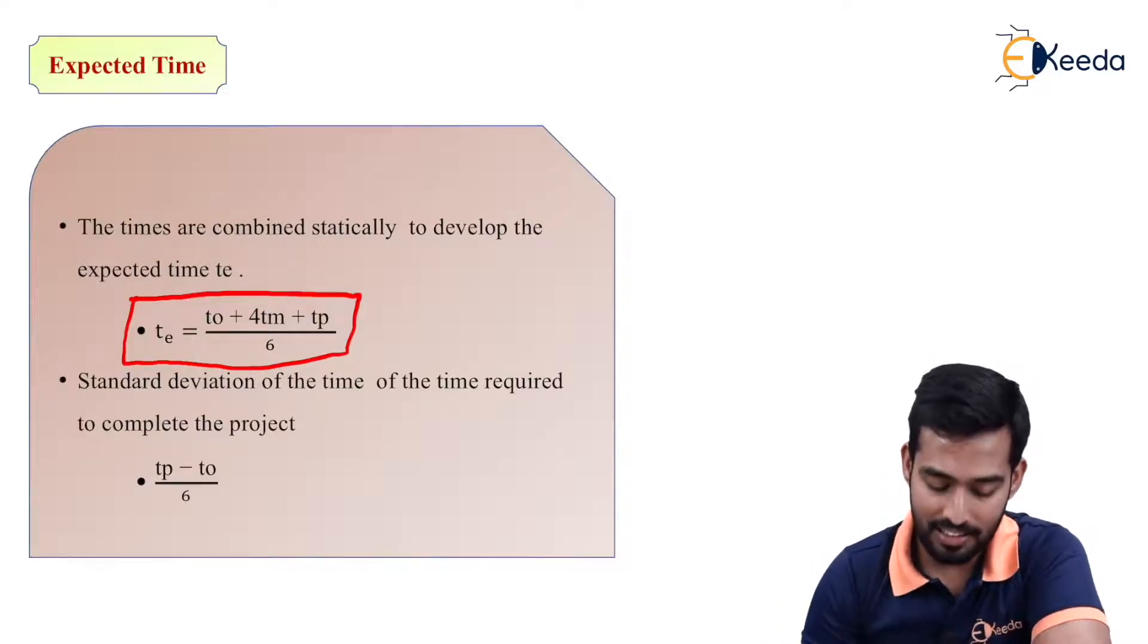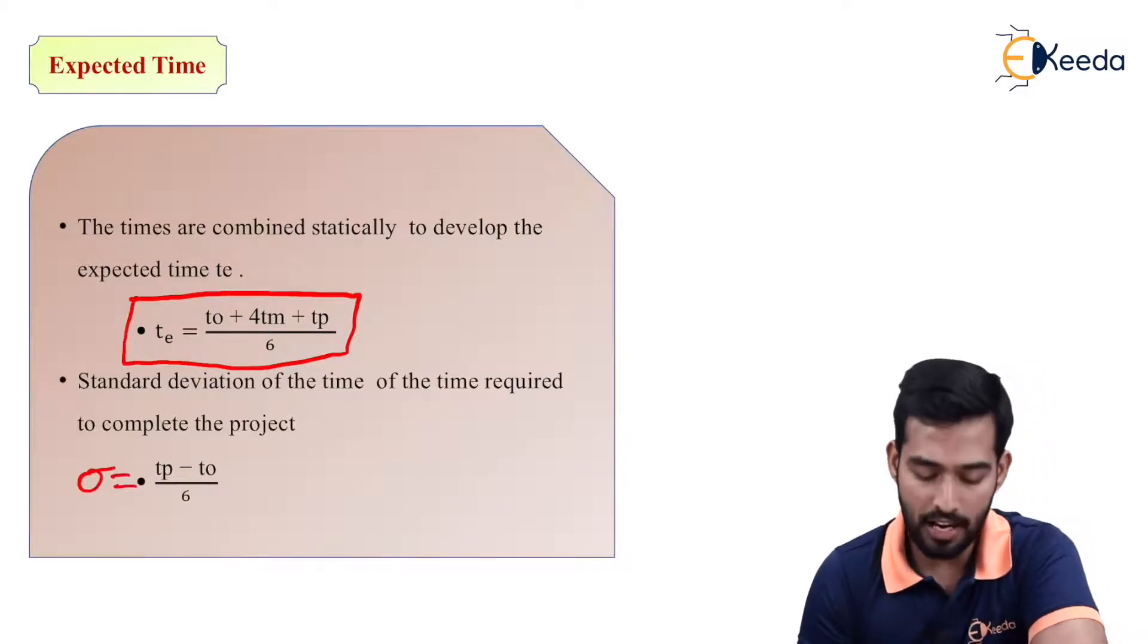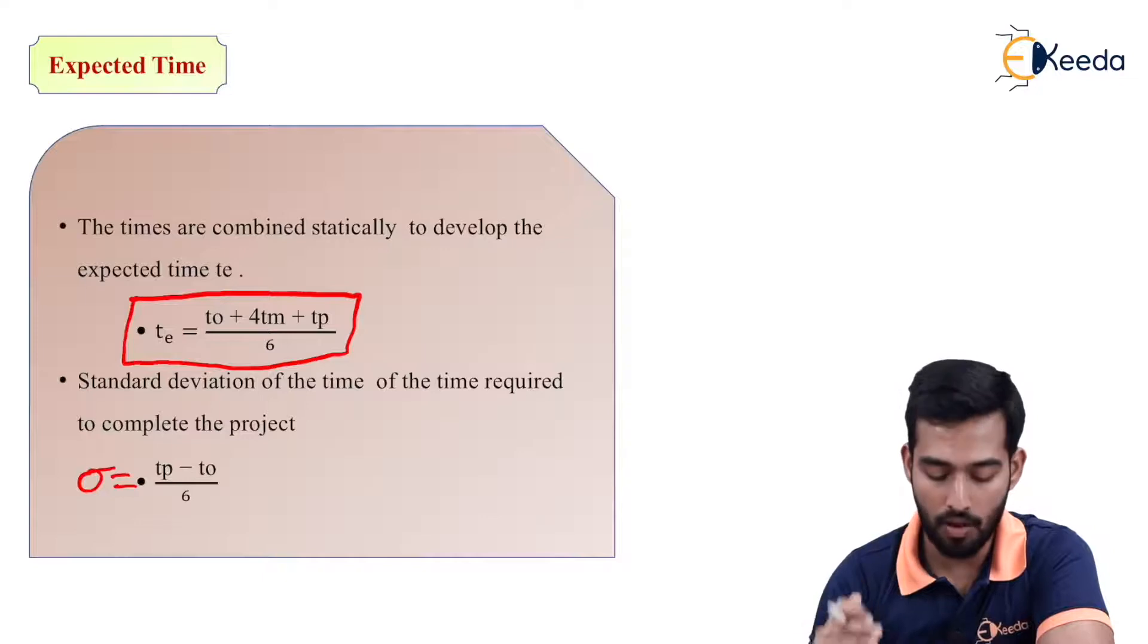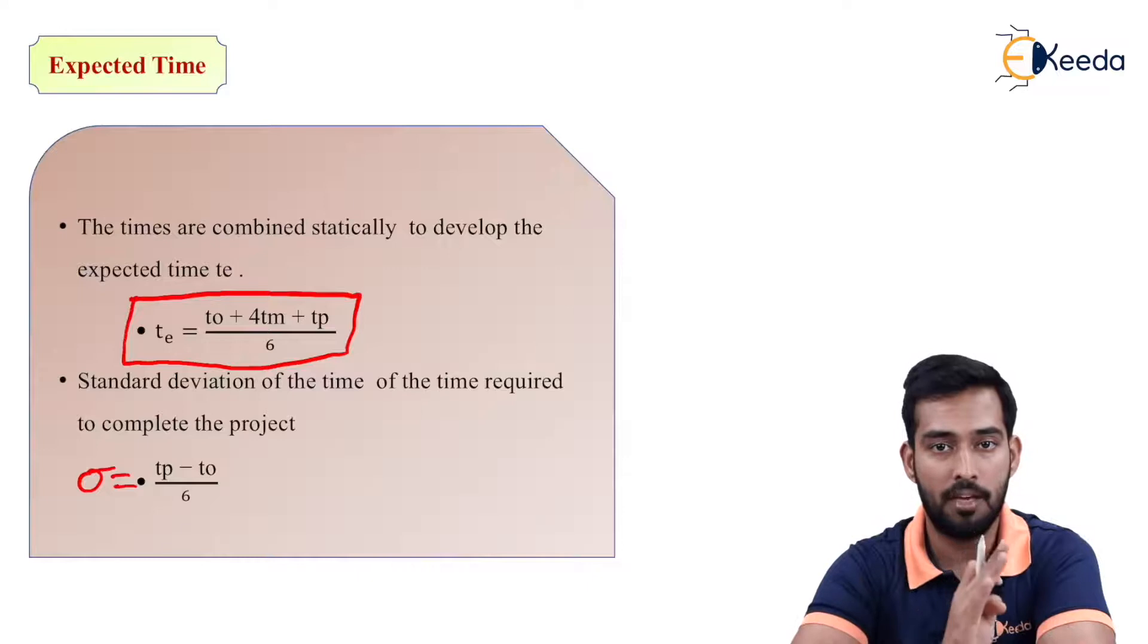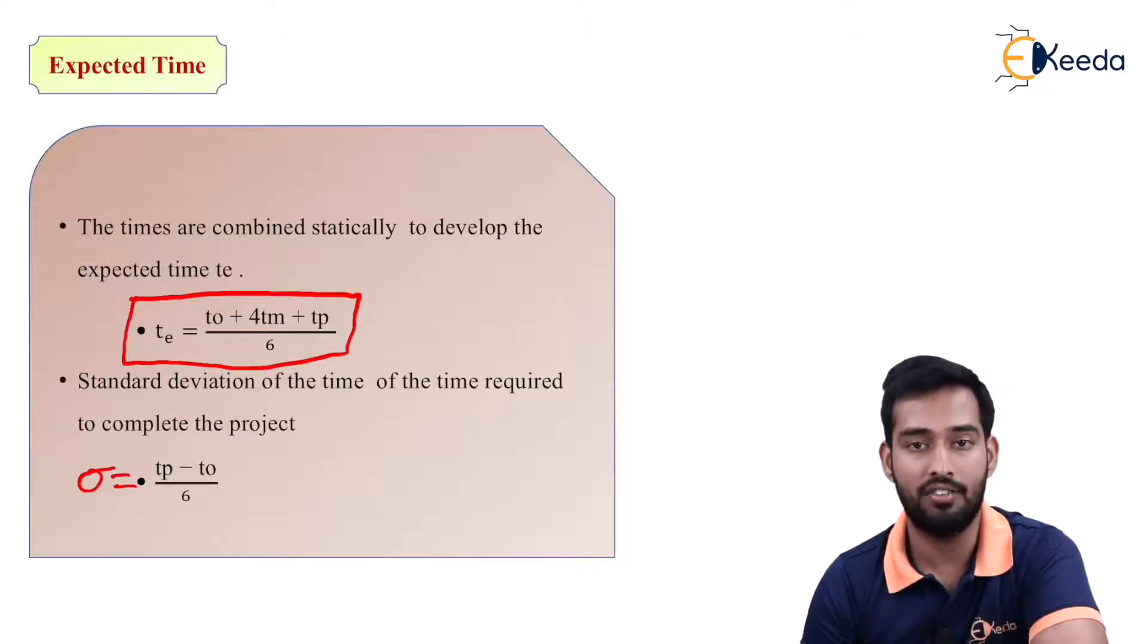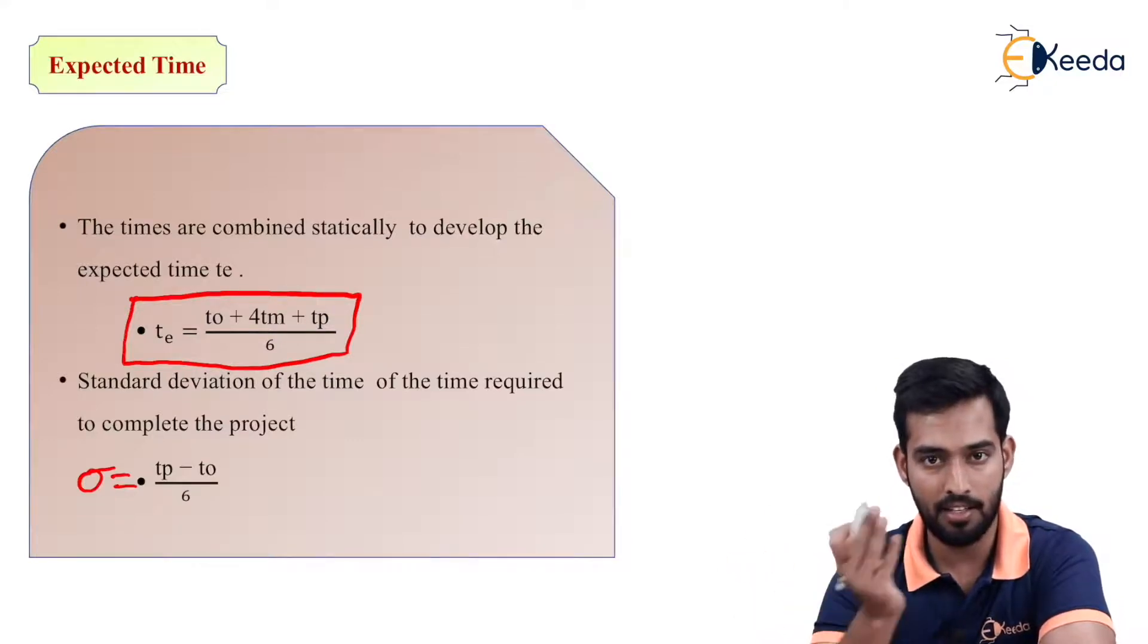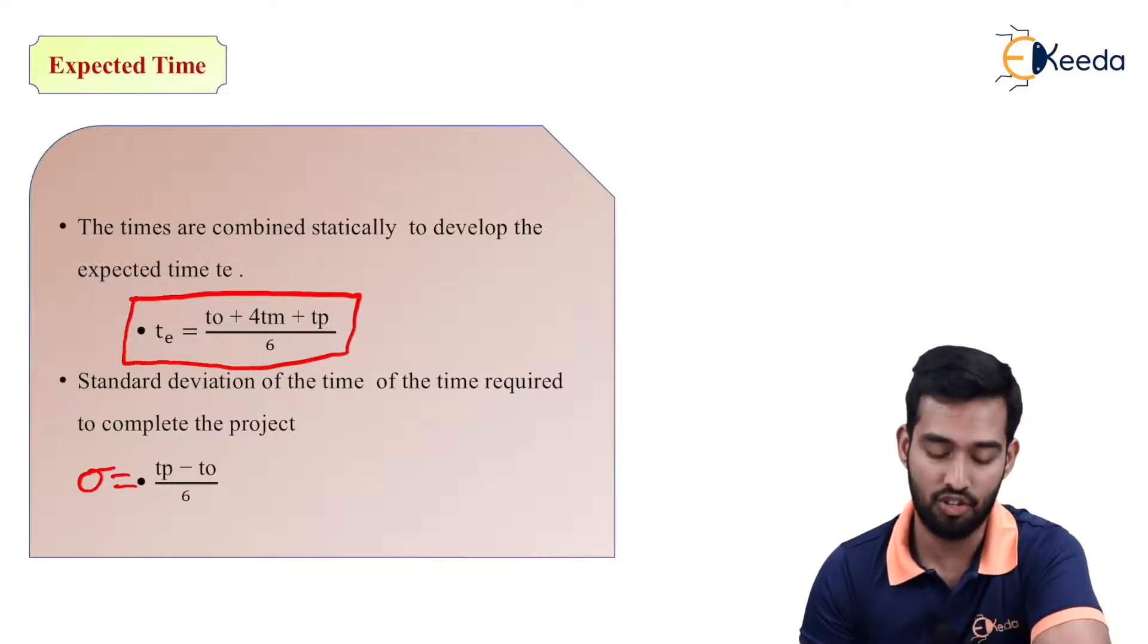Now next is standard deviation. You can denote it by sigma also. So standard deviation of the time of the time required to complete the project is TP minus TO upon 6. That is known as the standard deviation. Pessimistic time minus optimistic time upon 6 will give us standard deviation. As we know pessimistic time will be higher and optimistic time will be lower for the particular activity. So longest time minus minimum time upon 6 will give us standard deviation.